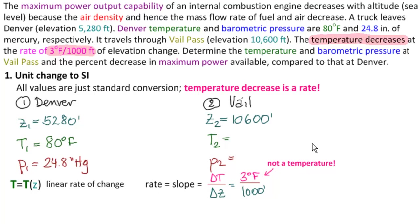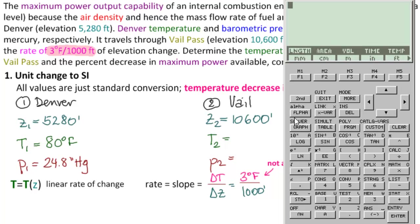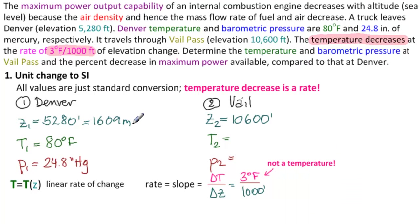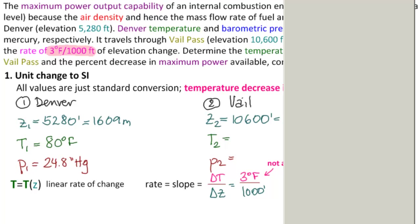Using a TI-86 calculator — any converter will work — we use the second converter function for unit conversions. For length, we convert 5,280 feet to meters, which gives 1,609.3 meters. Then we convert 10,600 feet, which gives 3,230.9 meters.